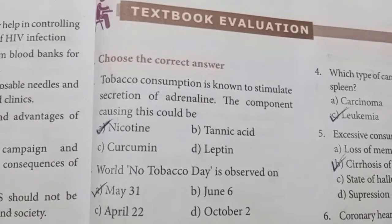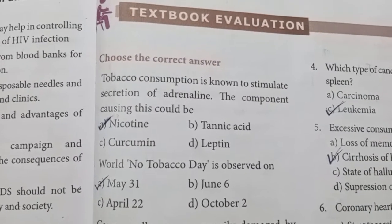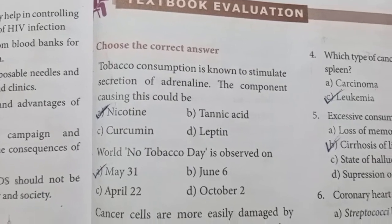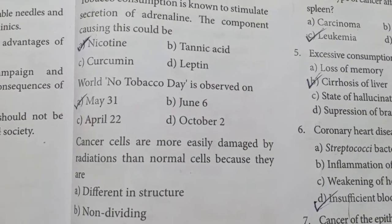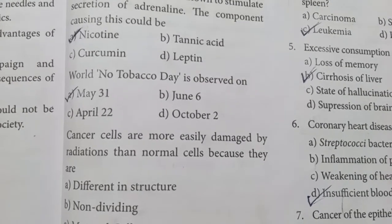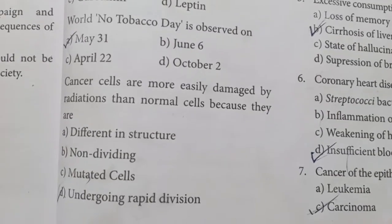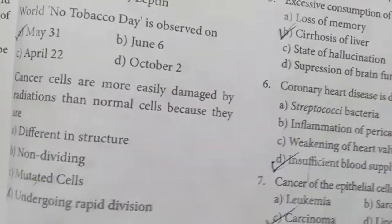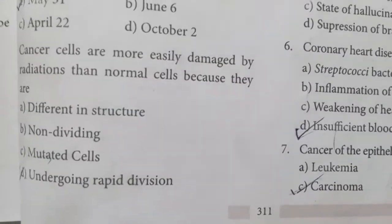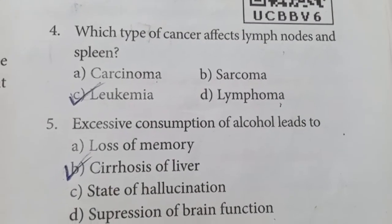Tobacco consumption is known to stimulate the secretion of adrenaline; the component causing this is nicotine. World No Tobacco Day is observed every year on May 31st. Cancer cells are more easily damaged by radiation than normal cells because they are undergoing rapid division — because of this character they can easily be damaged by radiation. The type of cancer that affects the lymph nodes and spleen is leukemia.